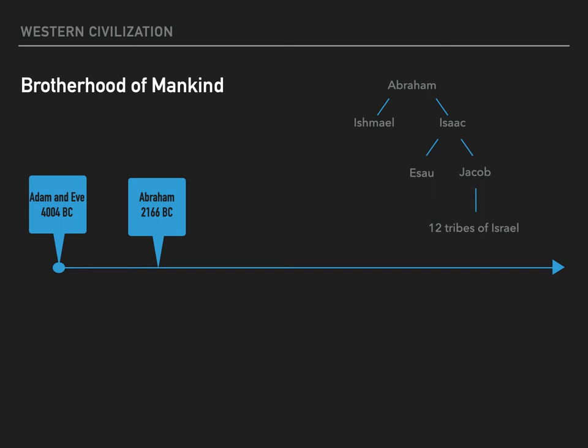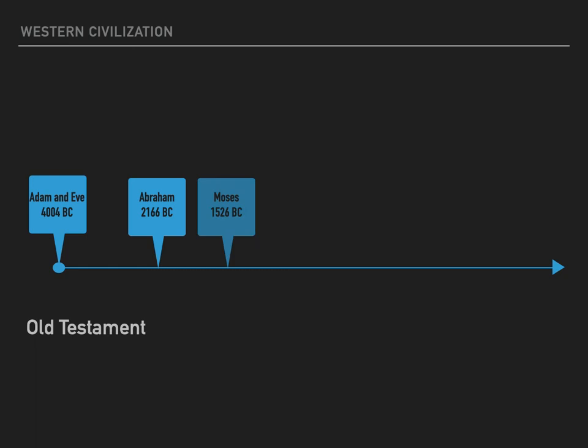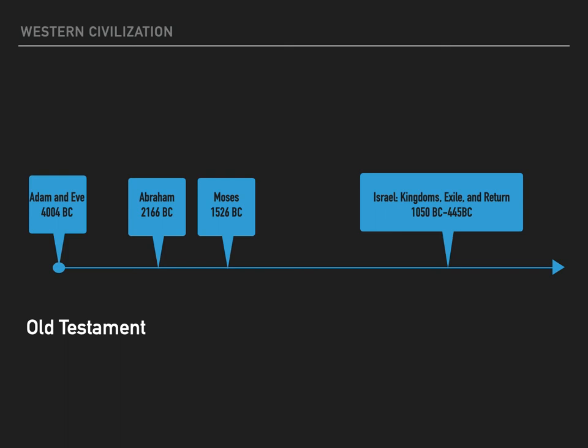Here's where we meet Moses, born around 1526 BC. This is Israel's great salvation story. Moses led his people out of Egypt, through the Red Sea, and eventually into the Promised Land. The Ten Commandments were given to Moses by God on Mount Sinai to teach Israel to be holy, because God is holy. God chose Israel to be his own people, but they would have to learn through the law to be holy in order to be in relationship with him. God's laws are perfect and above human-made law. Jewish history continues with the kingdoms, exile, and return of God's people to their promised land — from 1050 BC to about 445 BC — and their story is told in the Old Testament.